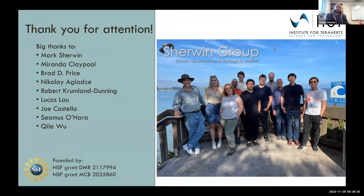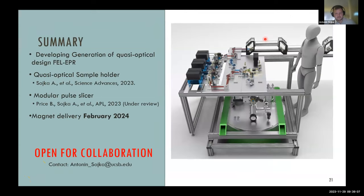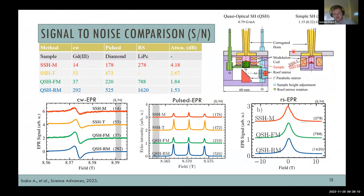Question about sample sizes: What sample sizes can fit in the quasi-optical sample holder? Normally we use a capillary roughly 6 mm long. In the quasi-optical sample holder there is about 8 mm diameter space for the sample. We have measured crystals placed on a small amount of grease, pressed powder, and liquids in capillaries.